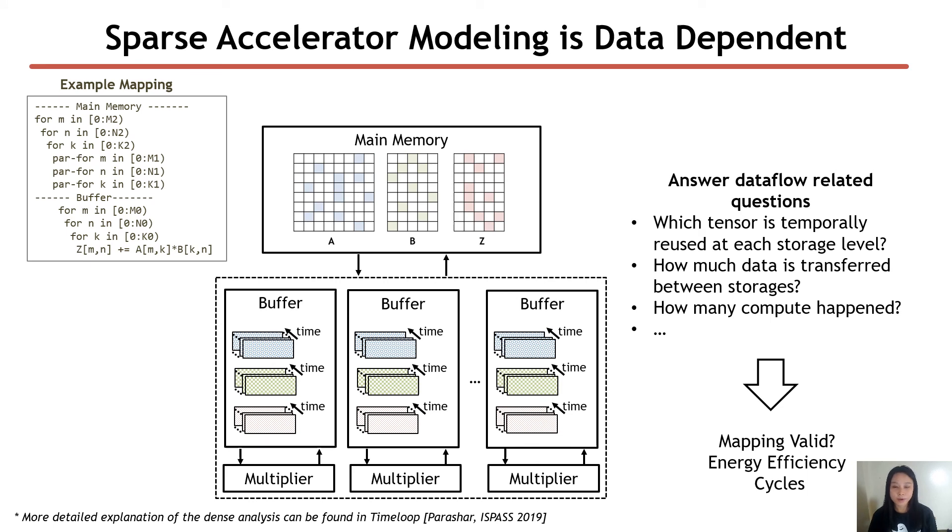But we care about sparsity as we are looking at all these sparse tensor workloads and sparse accelerator architectures. As you can see now, we have a sparse set of tensors sitting in the main memory. All of these values are passed to the buffers and compute unit. Because we are sparse tensor accelerators, we will be applying various types of sparse optimizations to each component in our architecture.